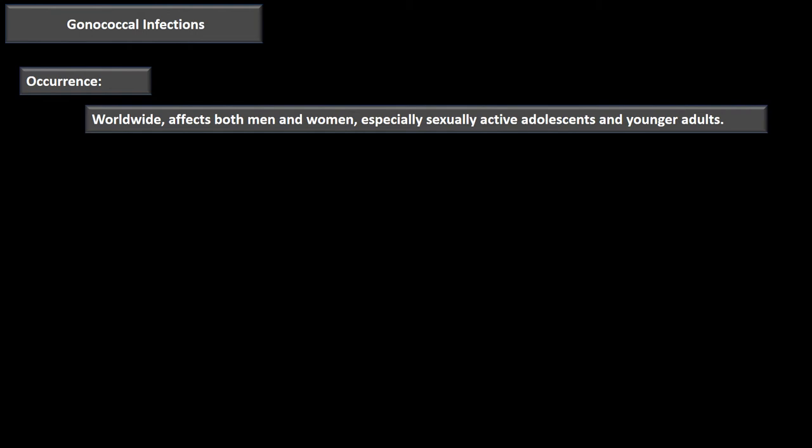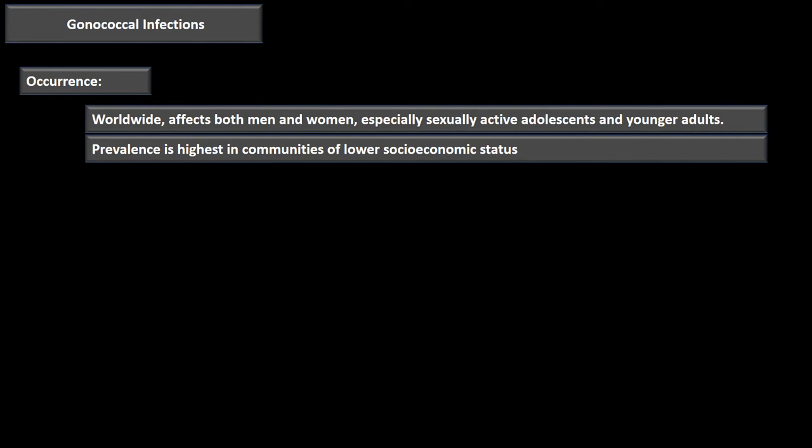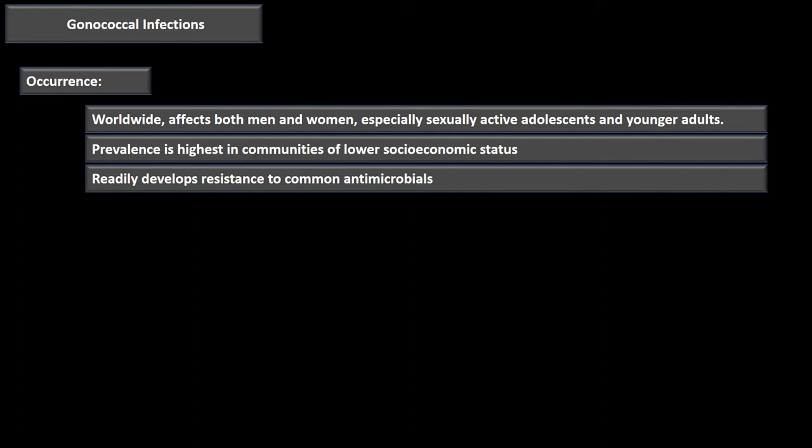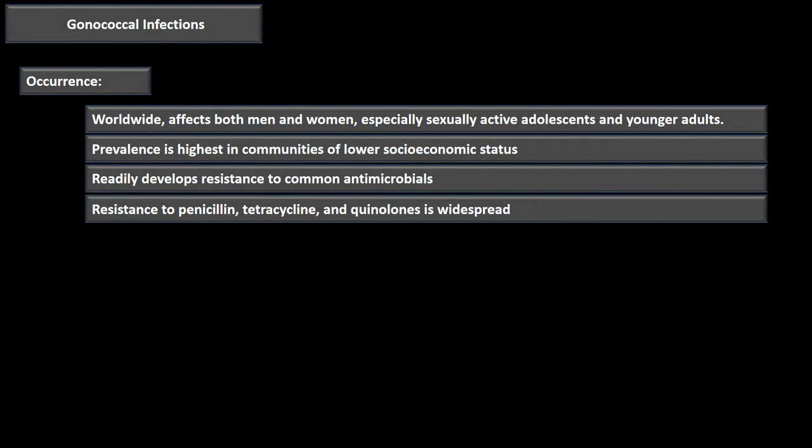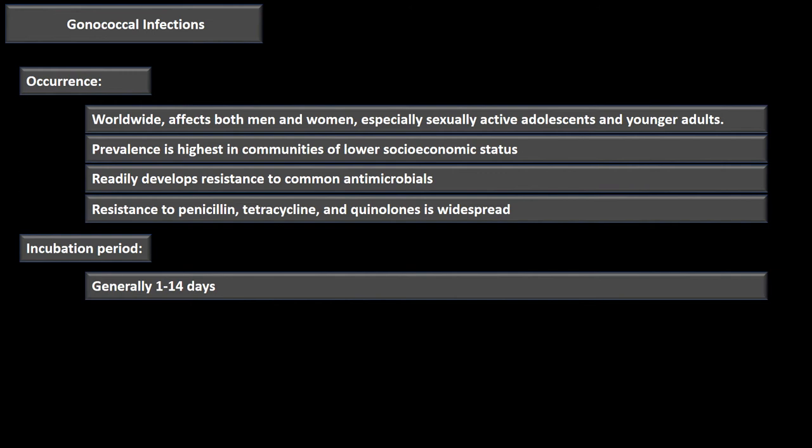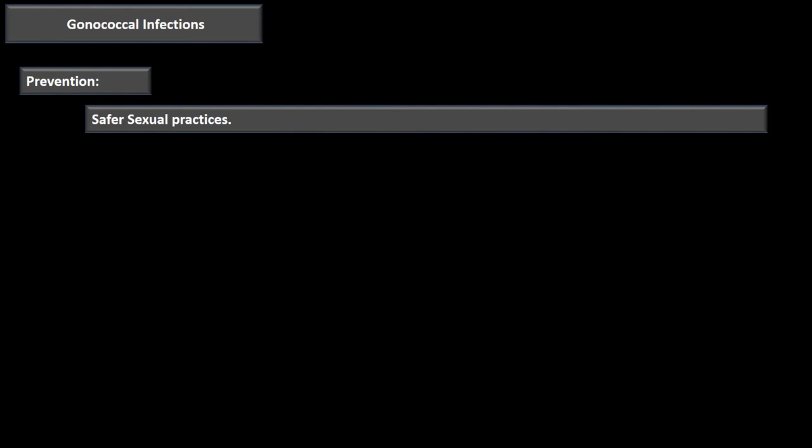Regarding occurrence: gonorrhea is worldwide, affecting both men and women, especially sexually active adolescents and younger adults. Its prevalence is highest in communities of lower socioeconomic status. It rapidly develops resistance to common antimicrobials — including penicillin, tetracyclines, and quinolones — which is a worldwide concern. The incubation period generally ranges from 1 to 14 days.